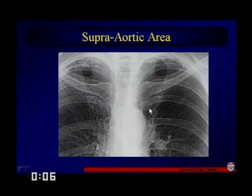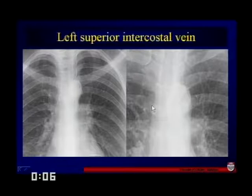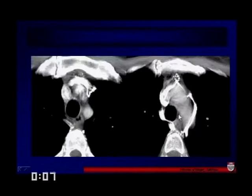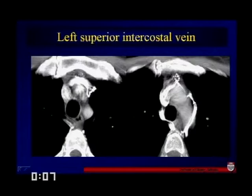This case shows an aortic nipple, which is formed by the left superior intercostal vein where it crosses over the arch of the aorta and comes superiorly downward across in front of it. You can see two different presentations of an aortic nipple, not to be mistaken for any kind of adenopathy. This is what it looks like by CT — the left superior intercostal vein crossing in front of the aorta forming our aortic nipple.